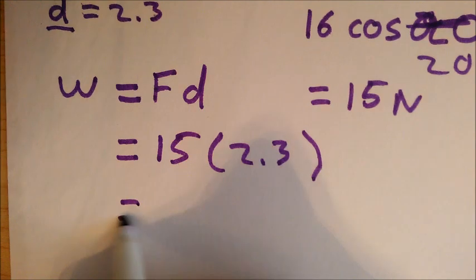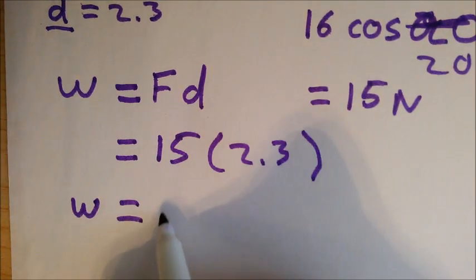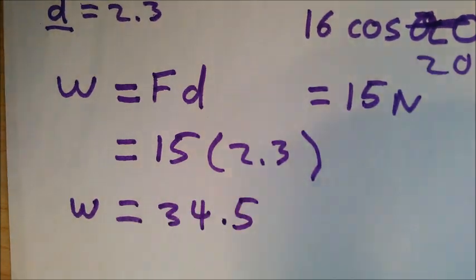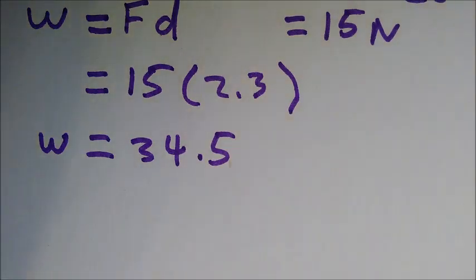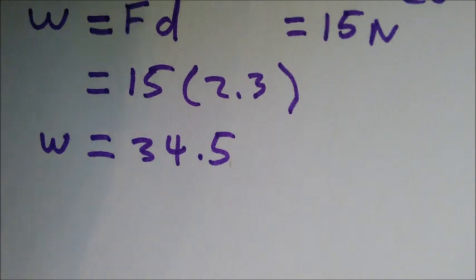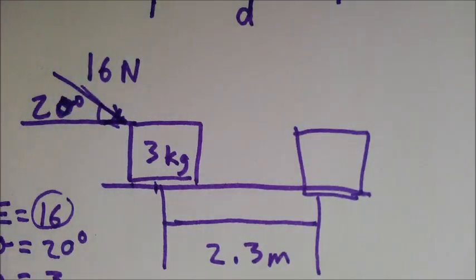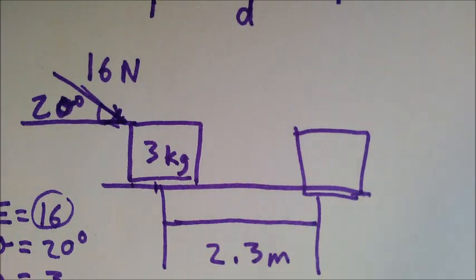So, therefore, work equals 34.5. Next, I need to determine the work done on the block by the normal force extended by the table. So, if we go back to this picture, this is how the box moves from here to here.